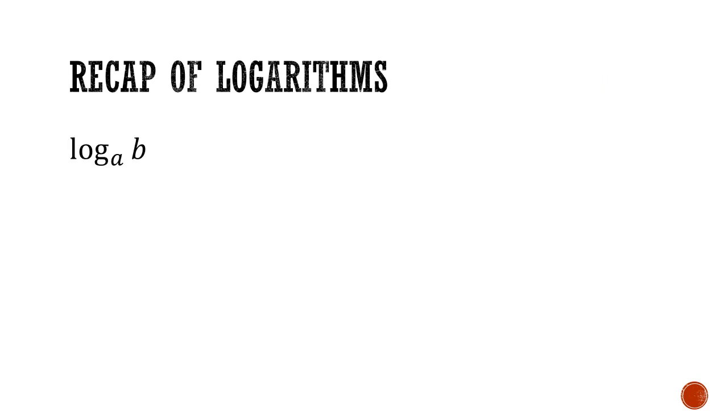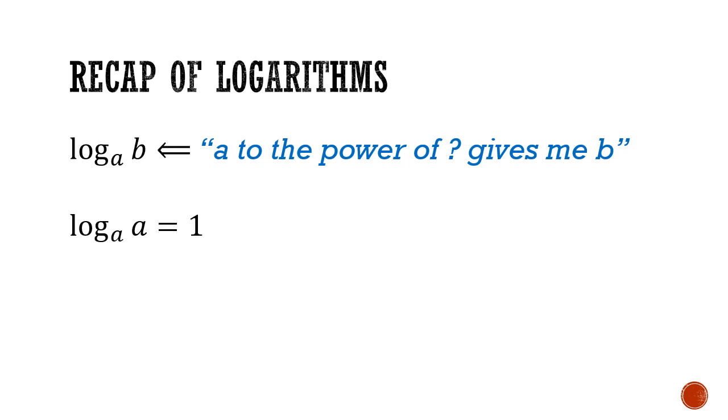When we see log base a of b, it is good to think of it as a to the power of what gives me b. So special results are log base a of a. It's like asking a to the power of what gives me a? Well, a to the power of 1 gives me a, so the result is always 1. What about log base a of 1? It's asking, a to the power of what gives me 1? And the answer is 0.